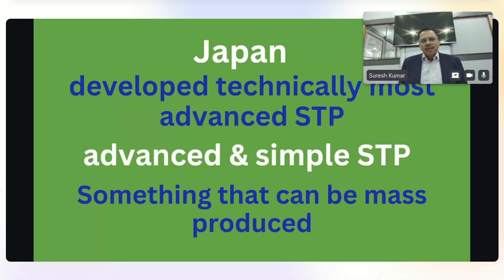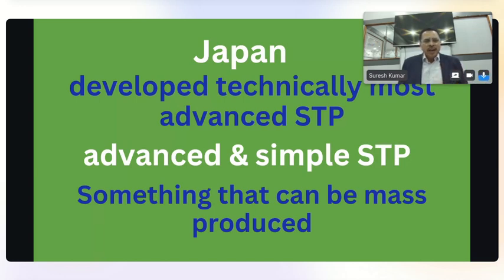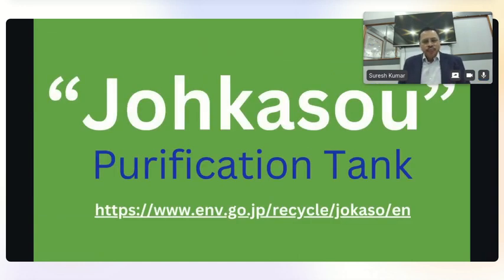Japan developed an advanced yet very simple sewage treatment plant — advanced at the same time very user-friendly, which is difficult to comprehend. The technology uses natural principles of biological processes to treat sewage at low cost and low noise. These STPs can be mass-produced in factories — there are 14 companies in Japan which sell over one lakh STPs every year. They call this technology Jokasu, which stands for 'purification tank' in Japanese.